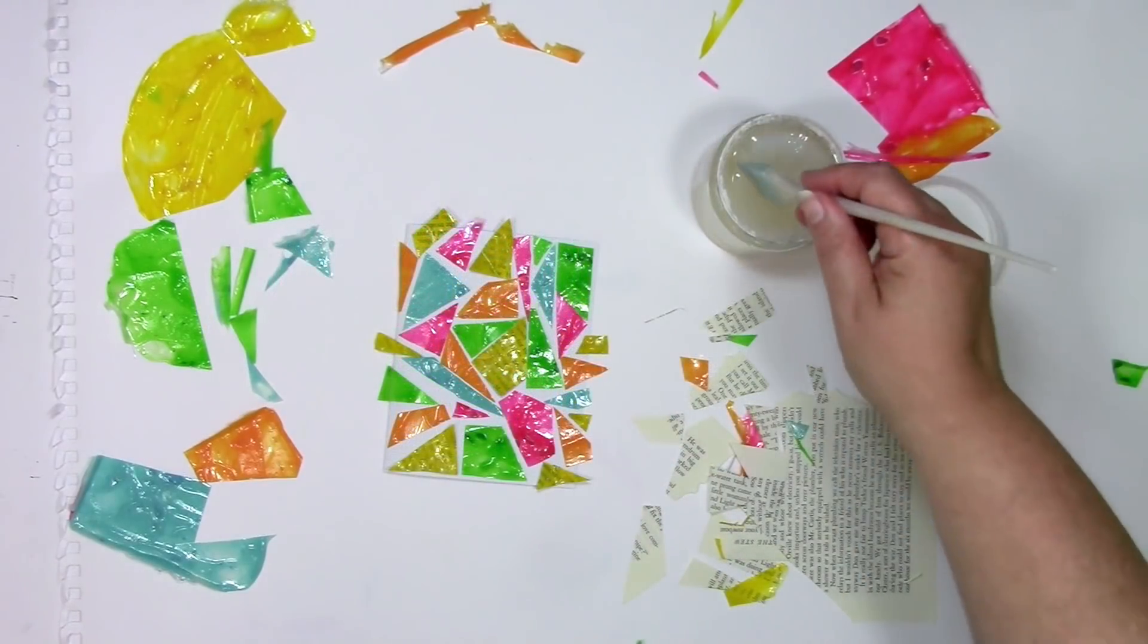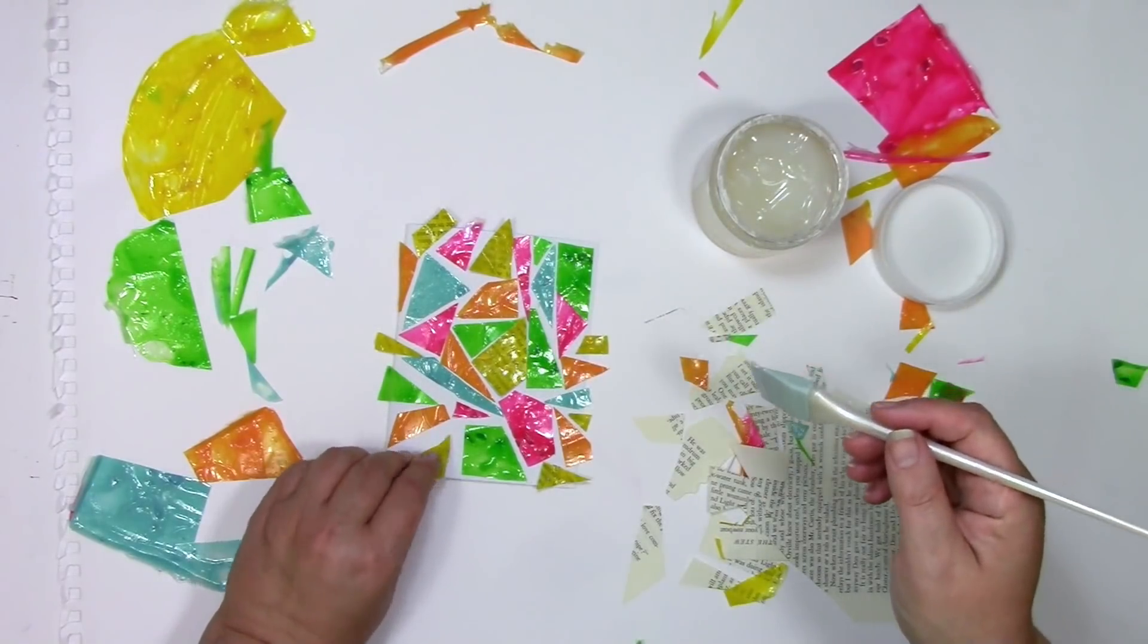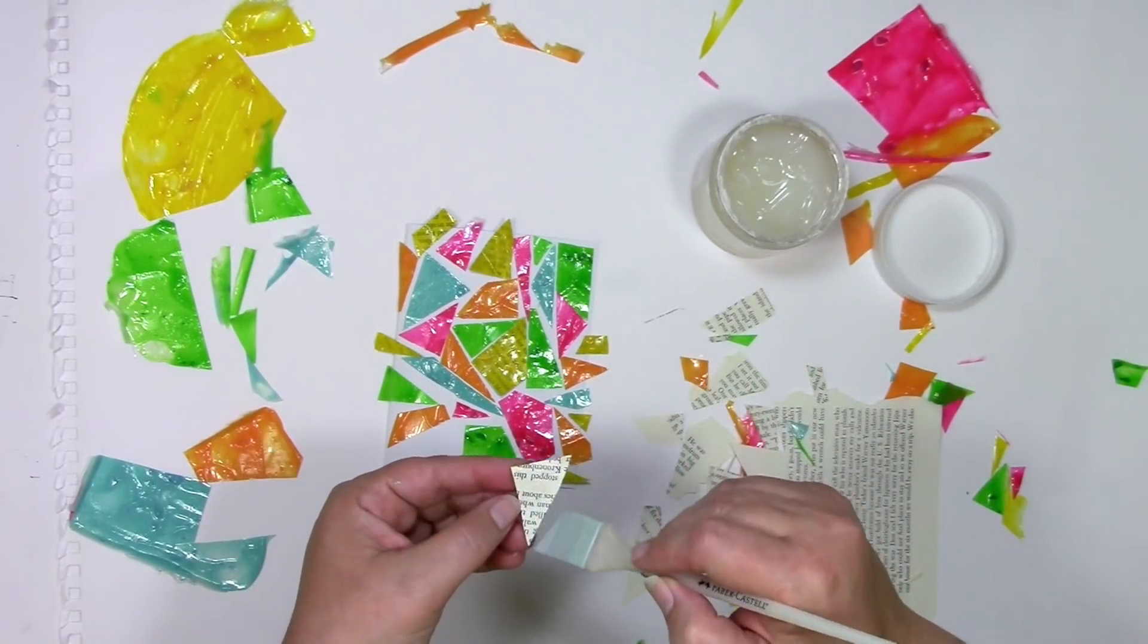All the yellow pieces now have some words underneath it, thanks to being attached to some book text. The last step is to start gluing each one of the pieces on.